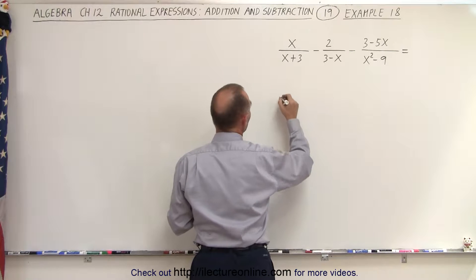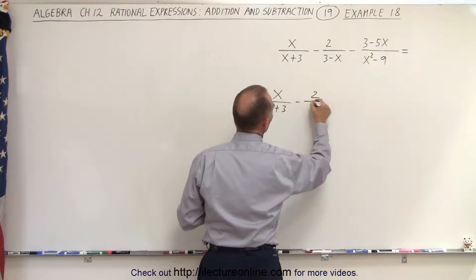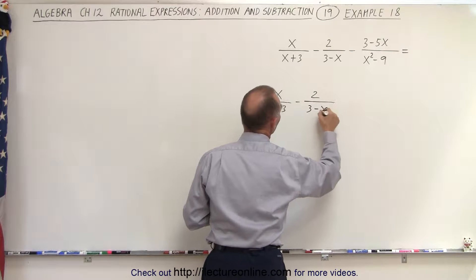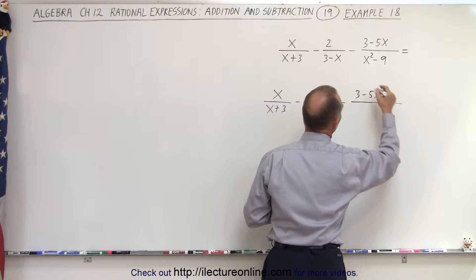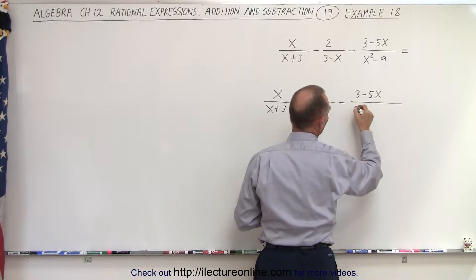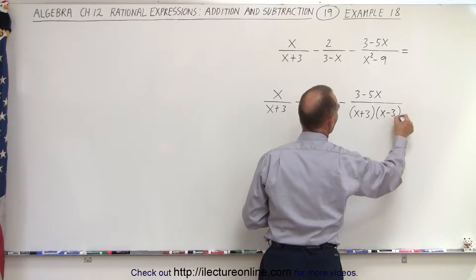So let's go ahead and factor this denominator right here. This can be written as x over x plus 3 minus 2 divided by 3 minus x minus 3 minus 5x over, since this is the difference of squares, x plus 3 times x minus 3.